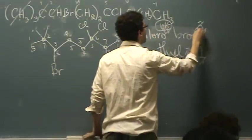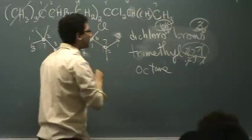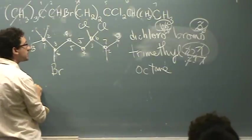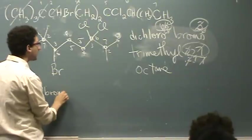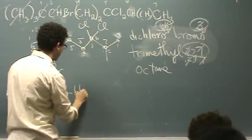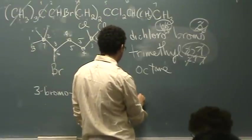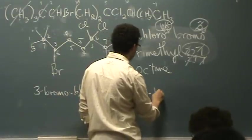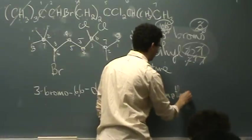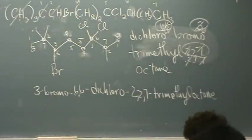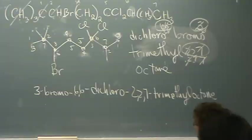I'm going to take those numbers from the top numbering system. That will be in alphabetical order. The bromo comes first, so it's 3-bromo. Then comes the chloro, a 6,6-dichloro. Then comes the methyl, a 2,2,7-trimethyl. And then comes the octane. The substituents in alphabetical order with their numbers and prefixes. And then finally the main chain. Does that work for you? Yes.